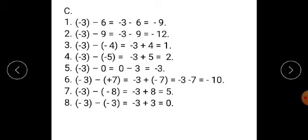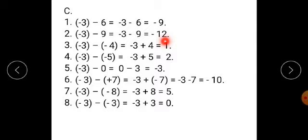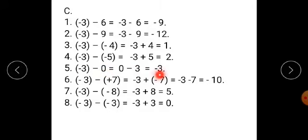The third number from the column is minus 3. Minus 3 minus 6 — both numbers are negative, so add both and give the common sign, therefore minus 9. Minus 3 minus 9 — again both negative, answer is minus 12. Minus 3 minus minus 4 — opposite of minus 4 is plus 4, so minus 3 plus 4 equals 1. Minus 3 minus minus 5 — minus 3 plus 5 — signs are different, so 5 minus 3 gives 2, sign of bigger number, therefore plus 2. Minus 3 minus 0 equals minus 3.